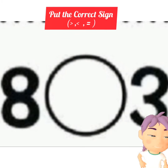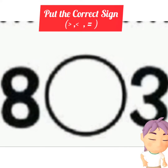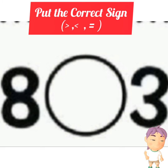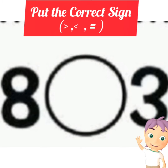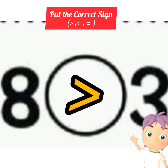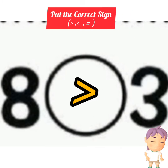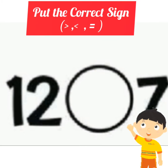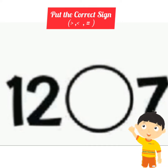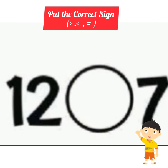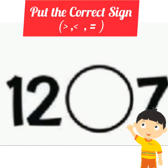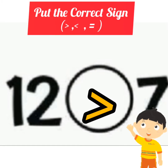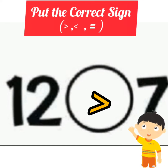Next numbers are eight and three. Which one is greater? Koon sa number bada hai? Eight. So put the sign of greater than — eight is greater than three. Next numbers are twelve and seven. Which one is greater? Twelve is greater than seven.